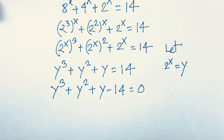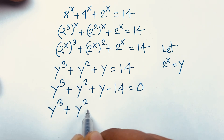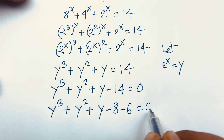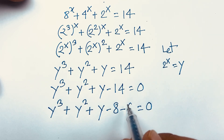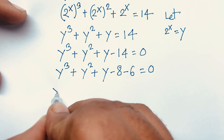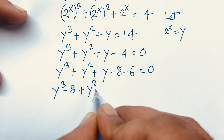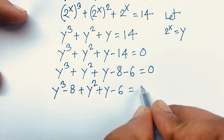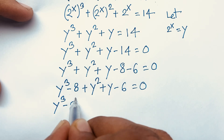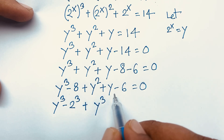This equation becomes y cubed plus y squared plus y minus 14 equals 0. I can split minus 14 as minus 8 minus 6, so it becomes y cubed minus 8 plus y squared plus y minus 6 is equal to 0. Now y cubed minus 8 is y cubed minus 2 cubed. And for y squared plus y minus 6, if I do middle-term factoring, I get 3y minus 2y minus 6.